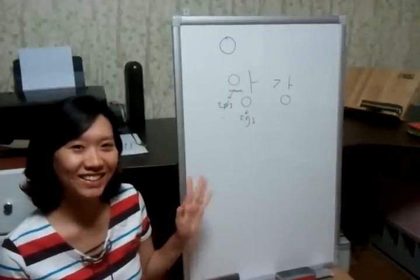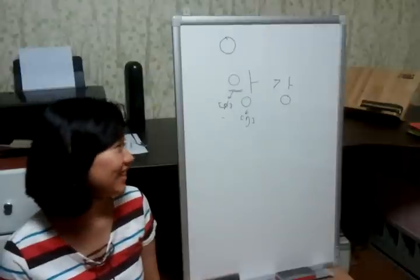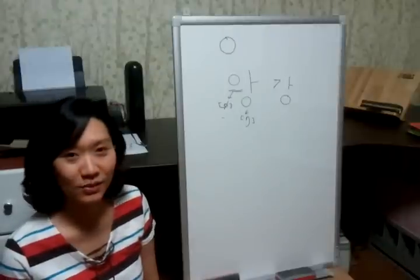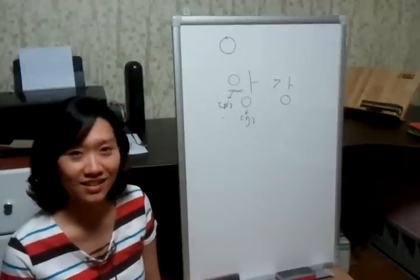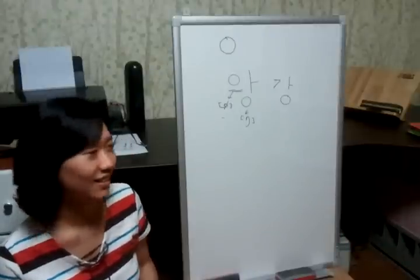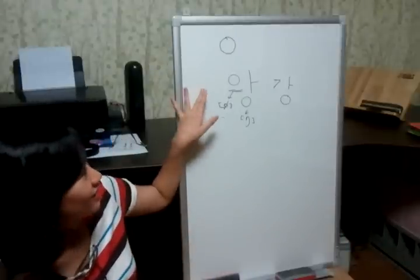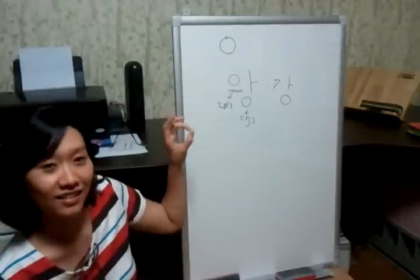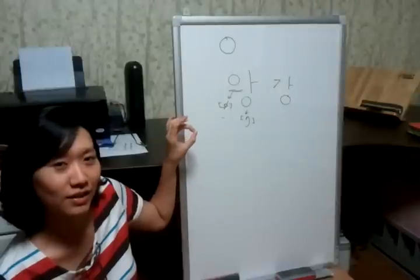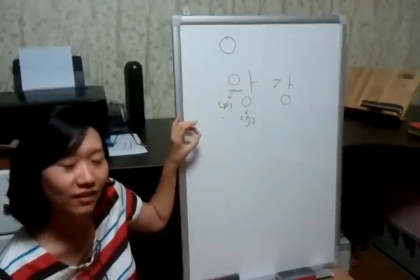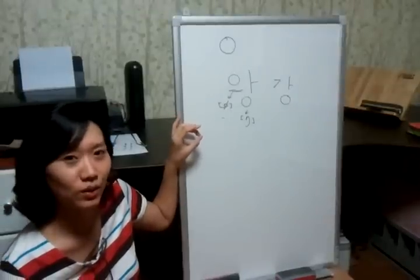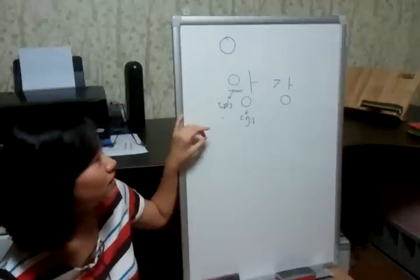Hi everyone, I'm Jenny Lee, and today I want to tell you about one of the Korean consonants, 이은. This circle-like consonant can be used at the ending of a syllable as well as the beginning of a syllable.